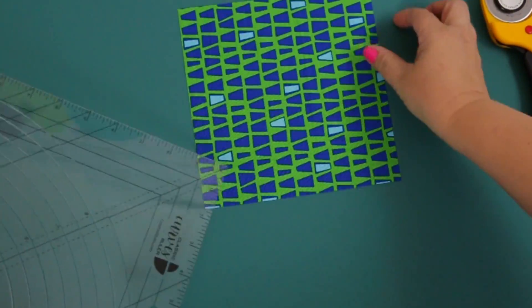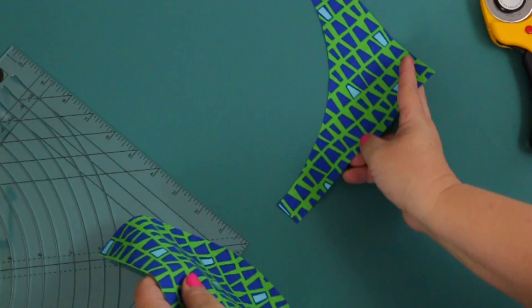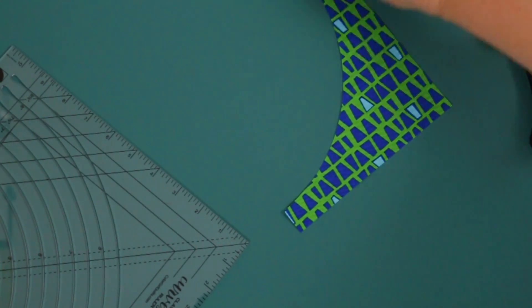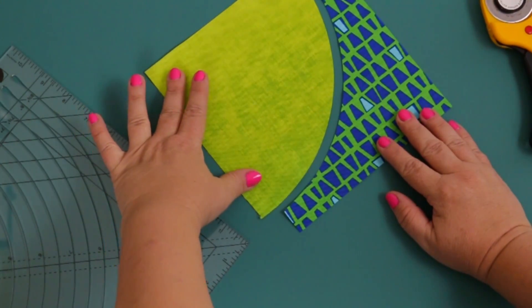And now once you remove, you will notice that you have the concave curve, which will fit perfectly into your convex curve.